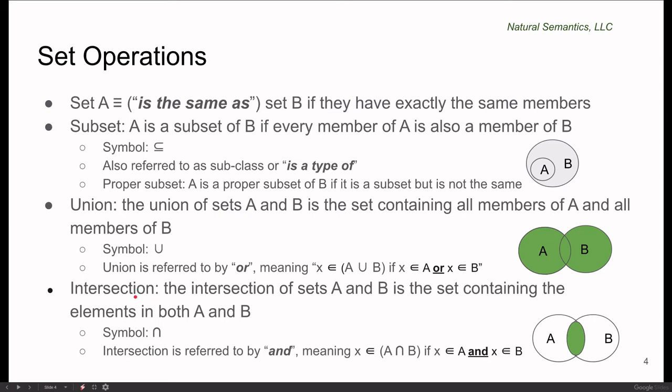Intersection: the intersection of sets A and B is a set containing the elements that are in both A and B. The symbol is an upside down capital U. In terms of Venn diagrams, the intersection is only not empty if the two figures overlap and the area of the overlap is the intersection of the two sets. Intersection is referred to by AND because X is a member of A intersect B if X is a member of A and X is a member of B.